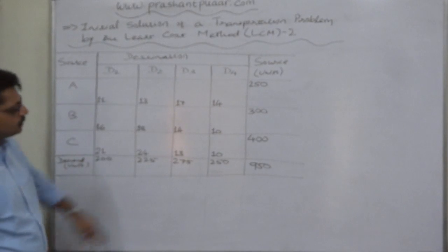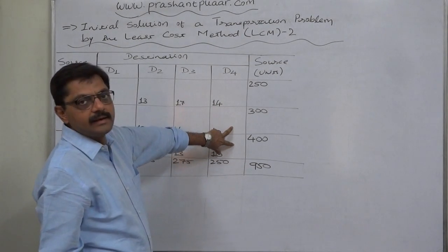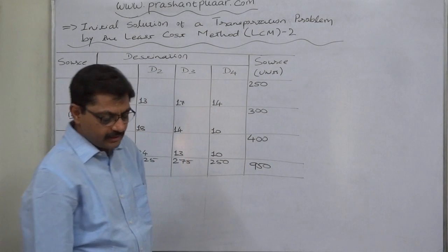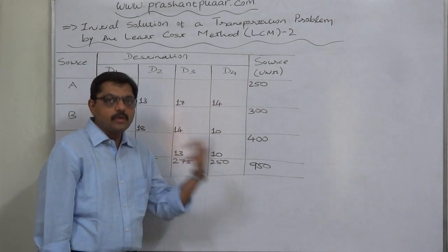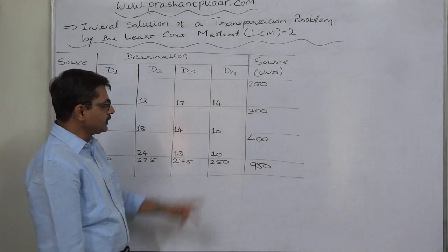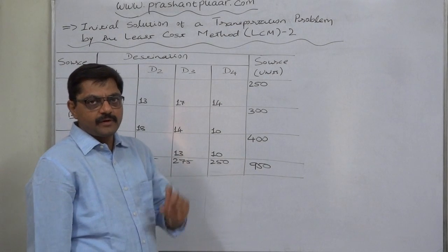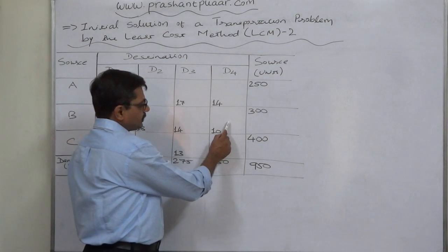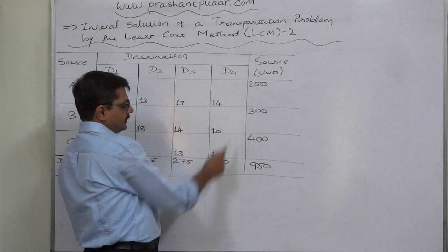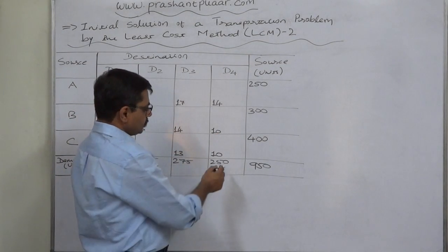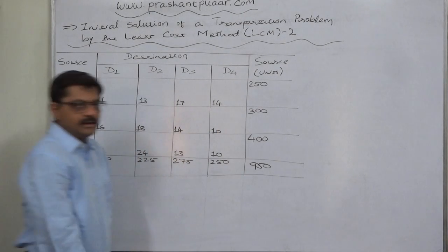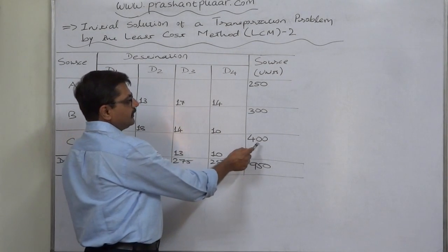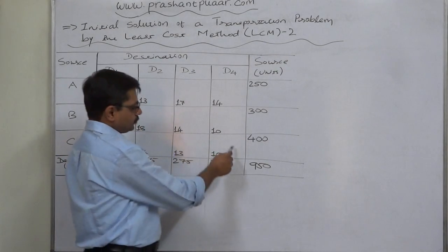First, out of all these twelve cells in a four-by-three table, two cells have the equal least cost of 10 rupees per unit, so there is a tie. The tiebreaker is the higher quantity of allocation — we prefer to allocate to the cell where we can allocate a larger quantity. If we allocate to the first cell, demand is 250 and supply is 300, so we can allocate 250 units. To the second cell, demand is 250 and supply is 400, so again 250 units.